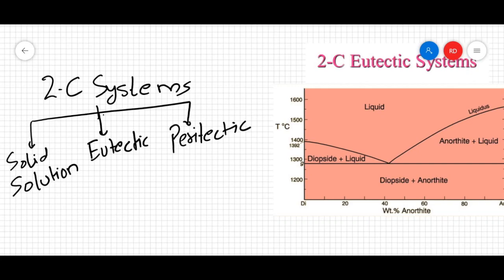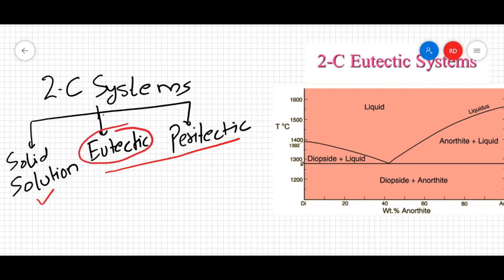Welcome back. After finishing two-component solid solution systems, we will start another type of system known as eutectic systems. As promised in the first lecture, we will study three types of systems. The first one is solid solution, which we already completed in the previous lecture series. What we are left with is eutectic and peritectic systems, and the focus of this lecture is going to be eutectic systems.